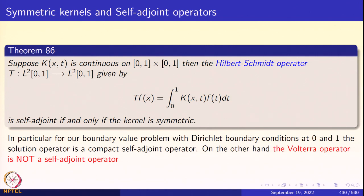That is the next theorem. Suppose k(x,t) is a continuous function on the closed rectangle [0,1]×[0,1]. Then the Hilbert-Schmidt operator T from L²(0,1) to L²(0,1) given by Tf(x) = ∫₀¹ k(x,t)f(t)dt is self-adjoint if and only if the kernel is symmetric. The Volterra operator is not self-adjoint because its kernel is not symmetric. In particular, since the Green's function for a regular Sturm-Liouville problem with Dirichlet boundary conditions is symmetric, those Hilbert-Schmidt operators arising as solution operators are automatically compact and self-adjoint.